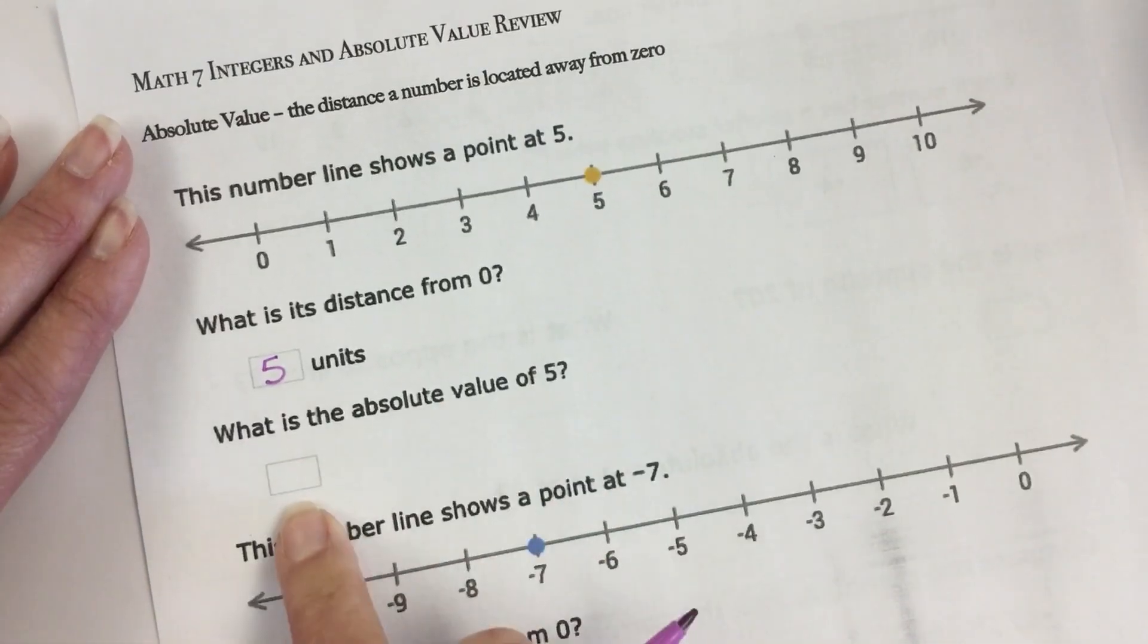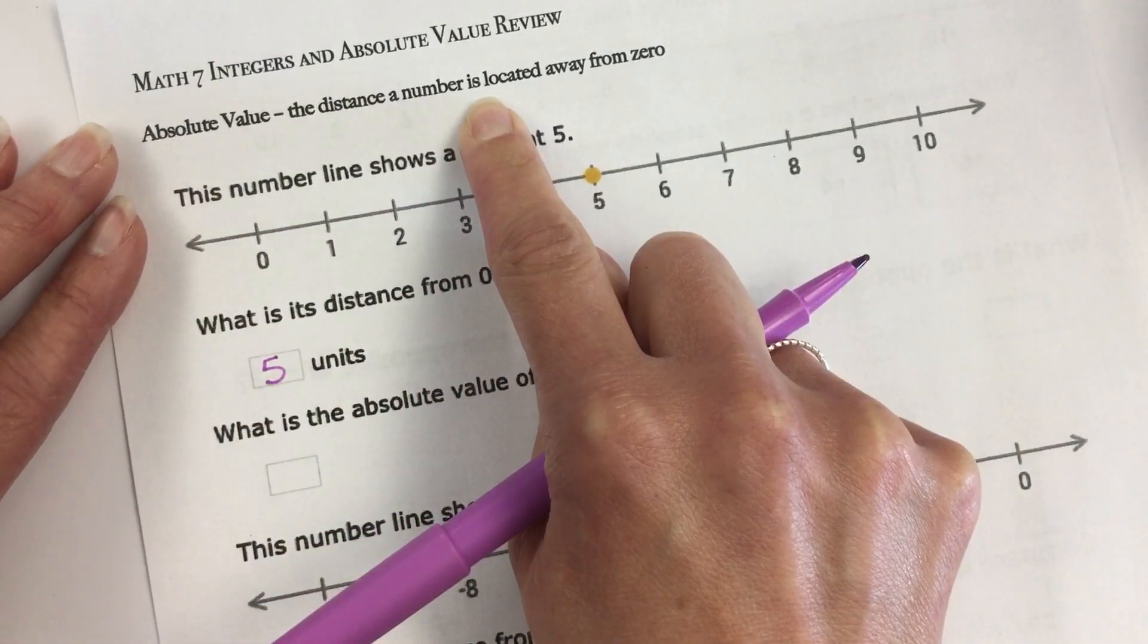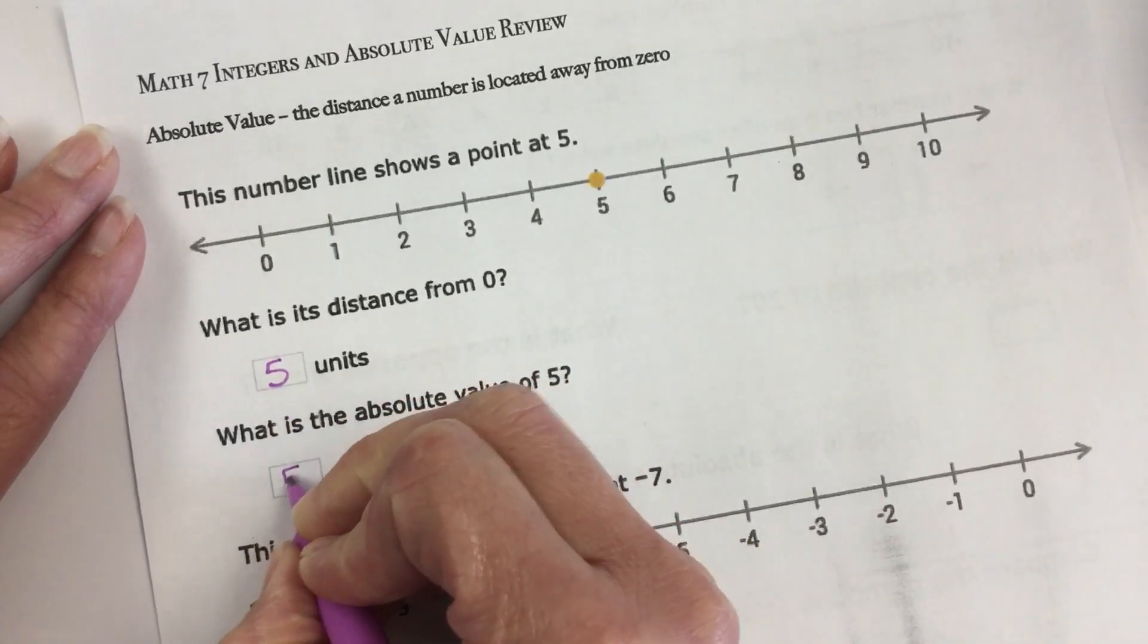Then it says what is the absolute value of 5? Well we know that absolute value is the distance a number is from zero. So guess what? They're the same.